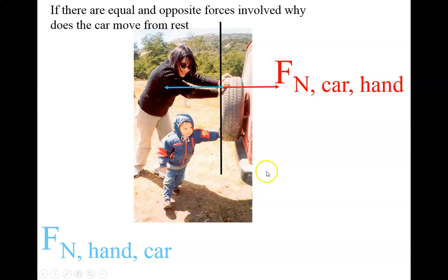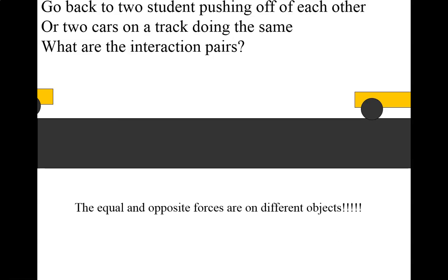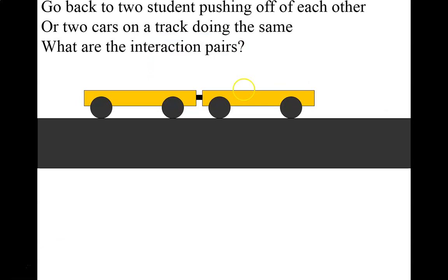So there are equal and opposite forces involved here. There's a force on the car by the hand and a force on the hand by the car. Why do things move if there are equal and opposite forces? I thought we said those cancel. Typically I do a demonstration where I have two kids sit on carts and they push off of each other — maybe with a plunger between them that when clicked will push them apart. When they push off, the force accelerating them is an equal and opposite force on each of the cars, but that equal and opposite force is on different objects, so there's a force on each of them causing them to accelerate backwards.